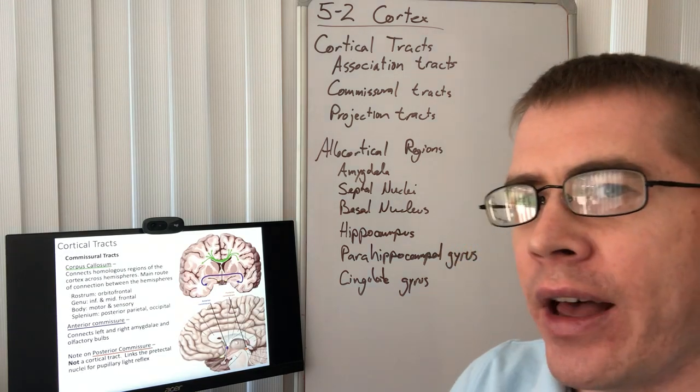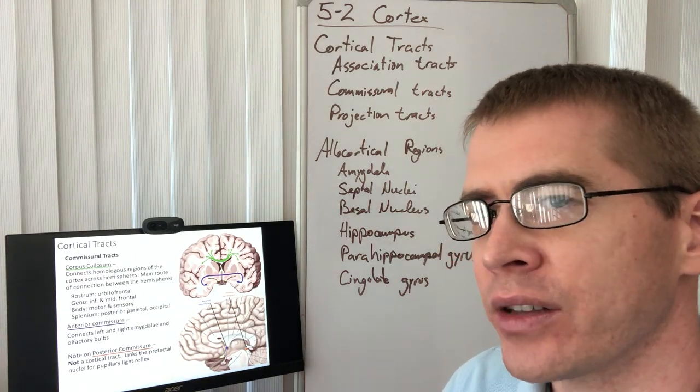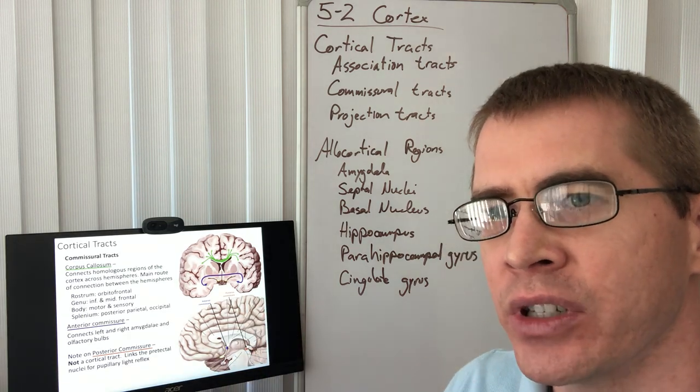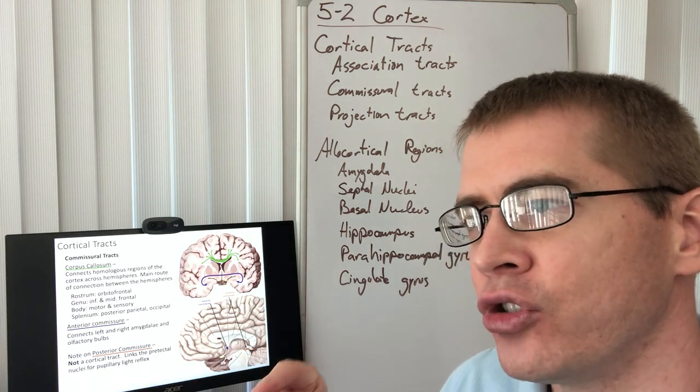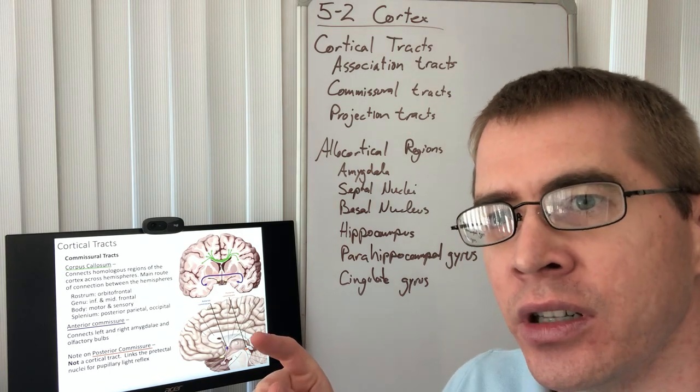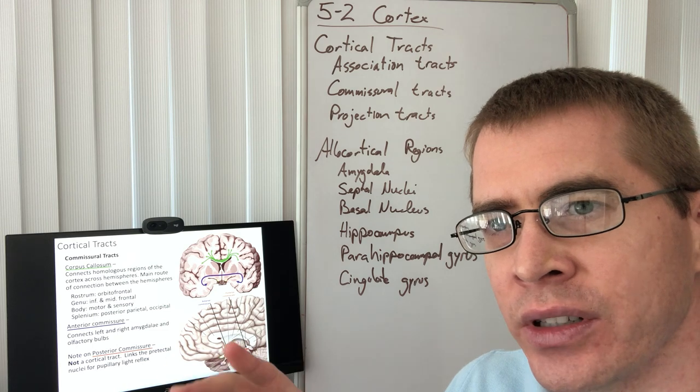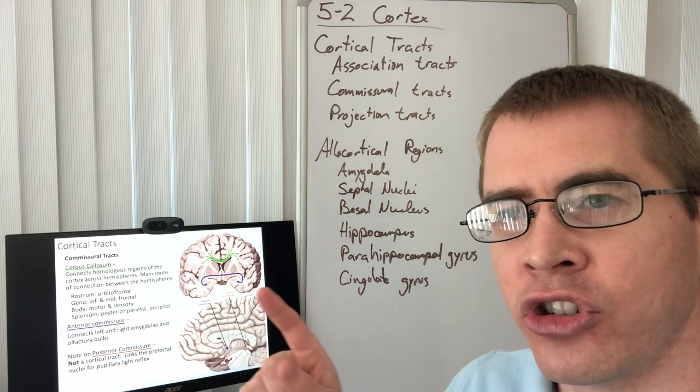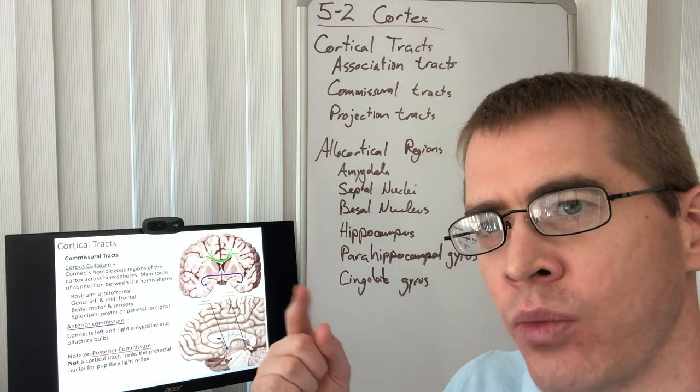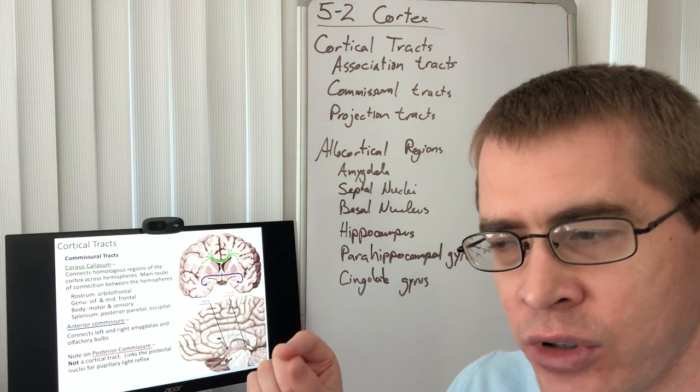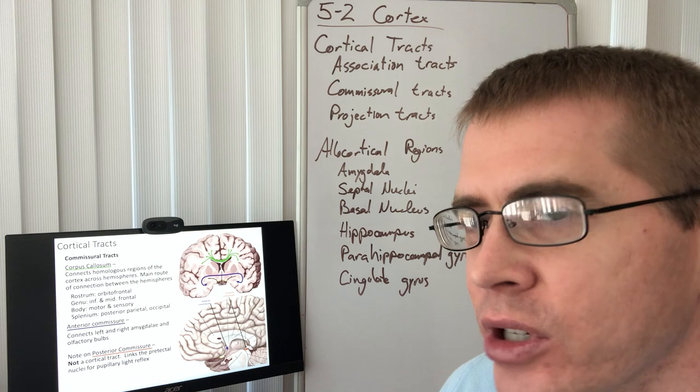Now we have commissural tracts, and again, these are crossing hemispheres to send information to the opposite hemisphere. They send information to basically the same location, but in the opposite hemisphere. So from, for instance, one amygdala to the other, or from one temporal cortex to the other temporal cortex, a specific region in the temporal cortex.